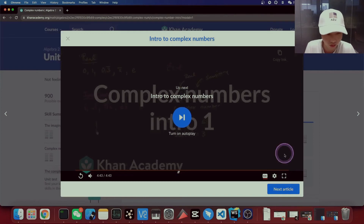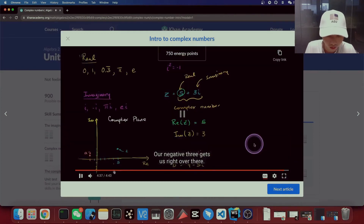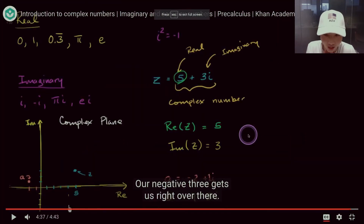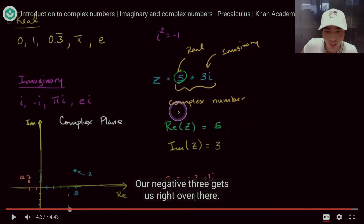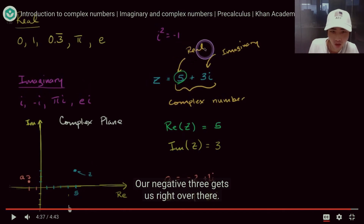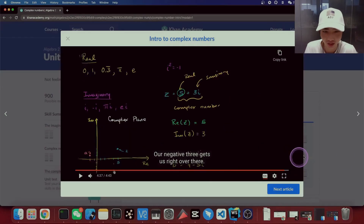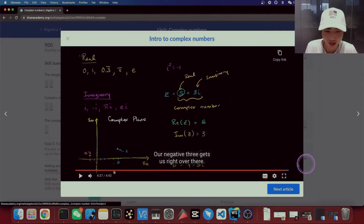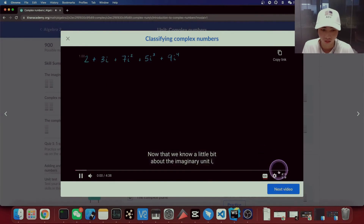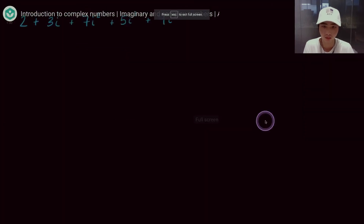What was shown here is what form makes a complex number — a real part and an imaginary part. But we weren't told what that means or why we need complex numbers.